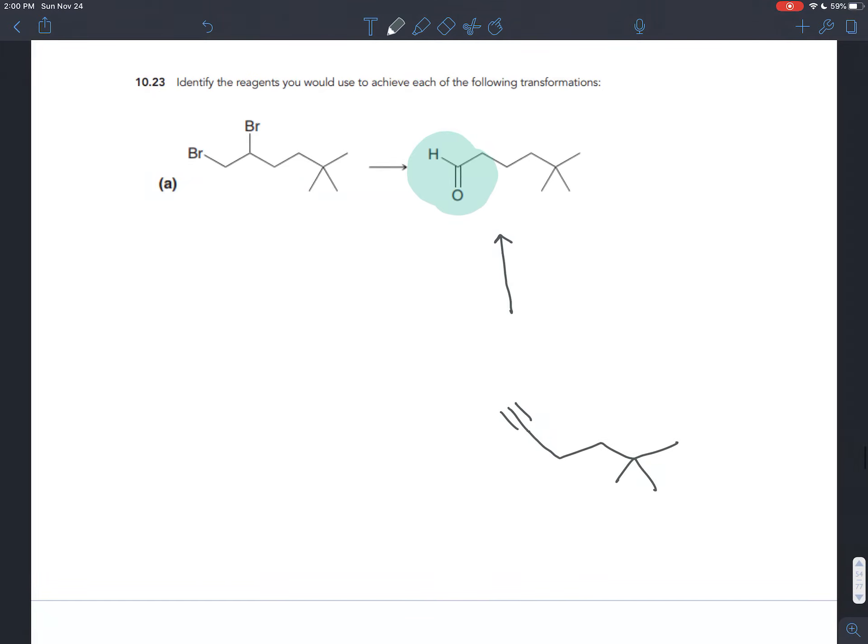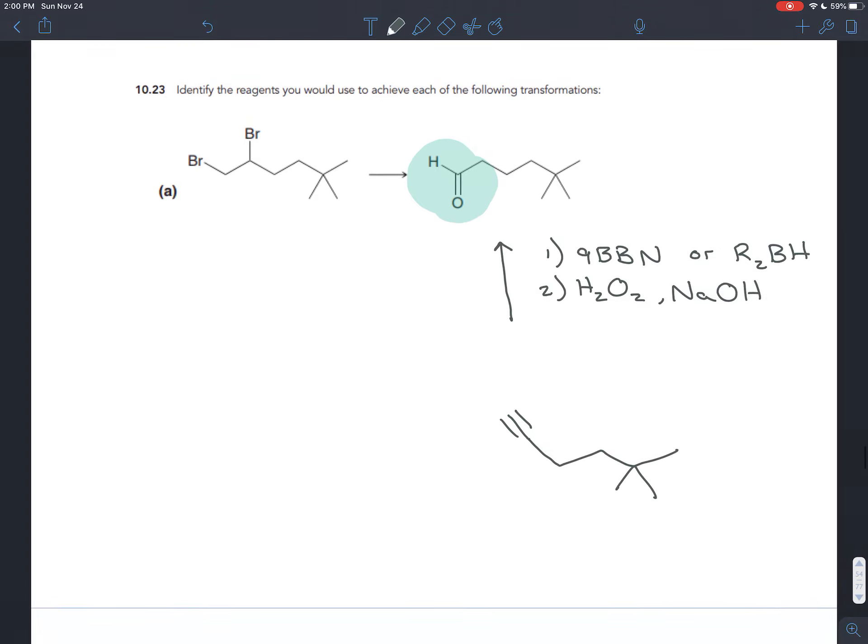If I had this alkyne, I could turn it into an aldehyde by doing hydroboration oxidation. That's what we learned in the previous video. Here we could do that by adding first either 9BBN or any dialkyl borane, followed by hydrogen peroxide and sodium hydroxide.